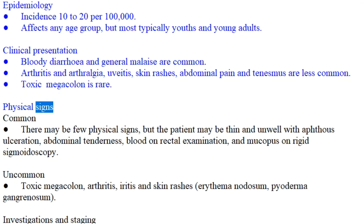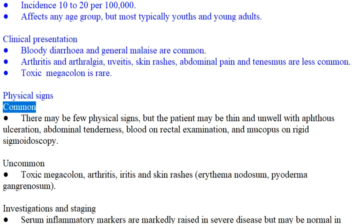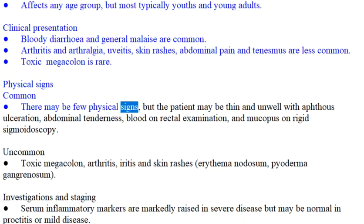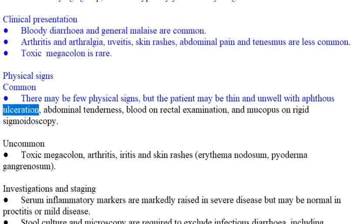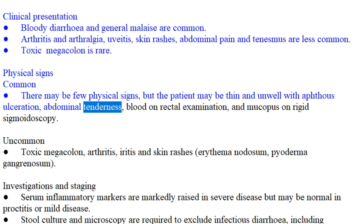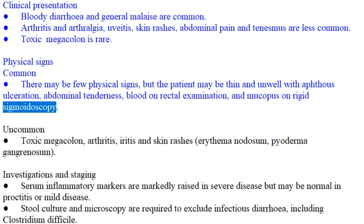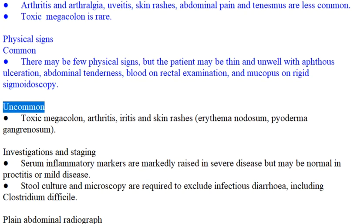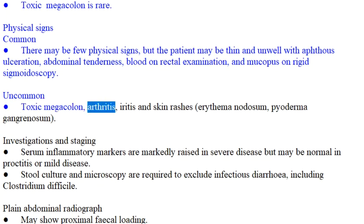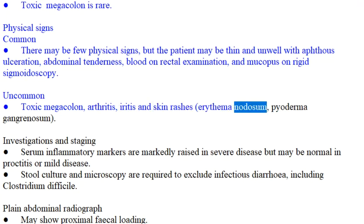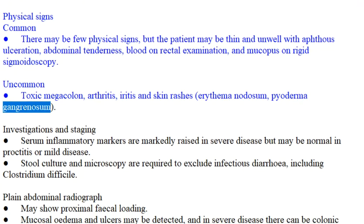Physical signs — Common: There may be few physical signs, but the patient may be thin and unwell with aphthous ulceration, abdominal tenderness, blood on rectal examination, and mucopus on rigid sigmoidoscopy. Uncommon: toxic megacolon, arthritis, iritis, and skin rashes including erythema nodosum and pyoderma gangrenosum.